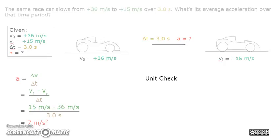The last step is for unit check. Meters per second minus meters per second over second equals to meters per second over second. Then we multiply meters per second by the reciprocal of second. Finally, we get meters per second squared.